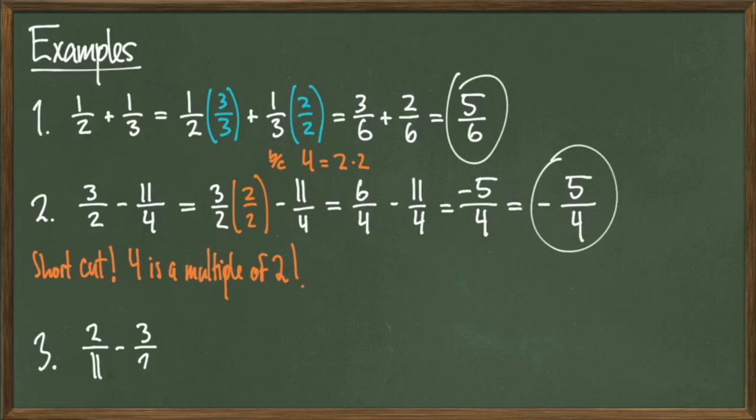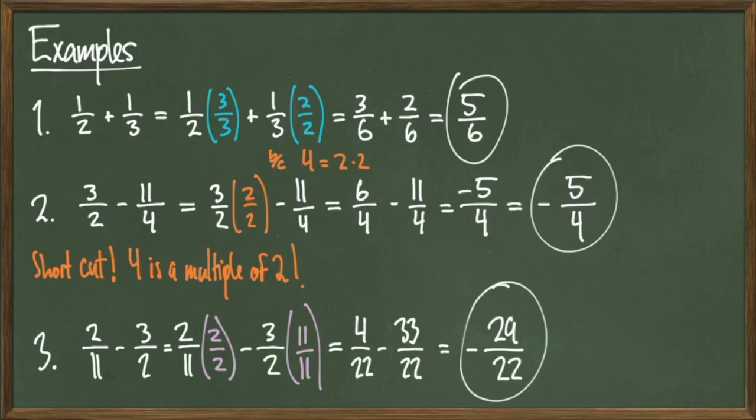For our last example, compute 2 over 11 minus 3 over 2. I can't take the shortcut because 11 is not a multiple of 2, so I'll multiply 2 over 11 by 2 over 2 and 3 halves by 11 over 11. Moving forward gives me 4 over 22 minus 33 over 22, which gives me a final answer of negative 29 over 22.